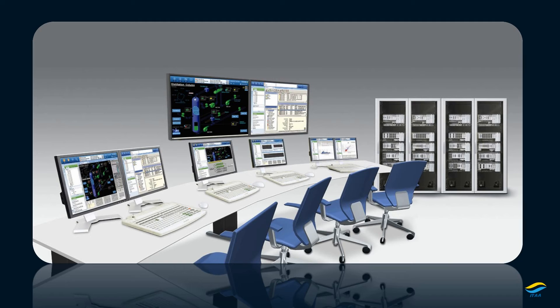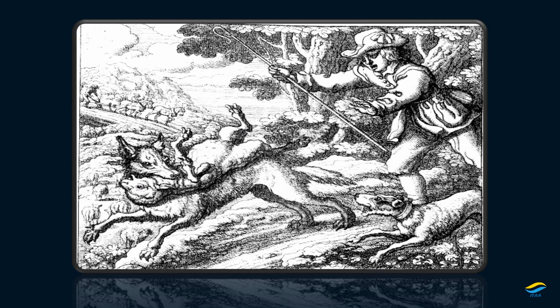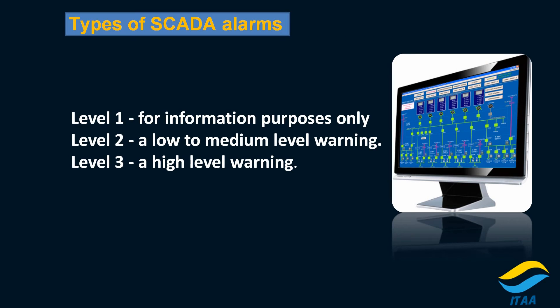Now, what are the three levels of SCADA alarms? Level one is for information purposes. For example, if some process instrument is getting out of calibration, it will give the operator an indication that a particular piece of equipment needs calibration. Level two is a low to medium level warning that indicates a serious problem is expected.